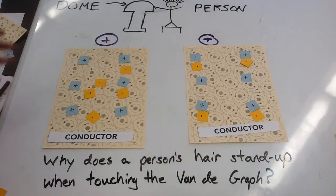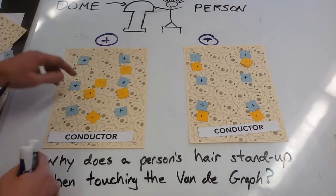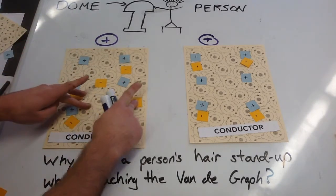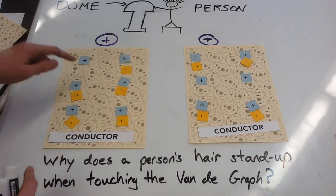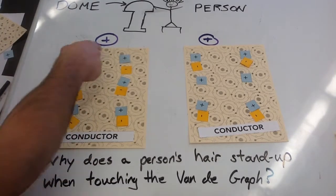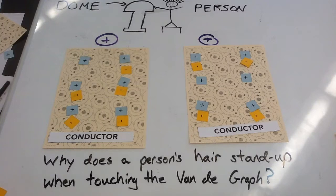For my dome, even though electrons moved over, if I look here, there are still more protons compared to electrons. So my dome is still positive in this case.